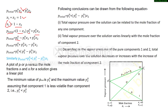Expanding: P01 − P01·X2 + P02·X2. Rearranging, we get the final equation: P_total = P01 + (P02 − P01)·X2.